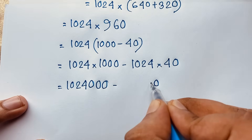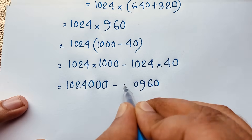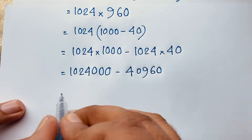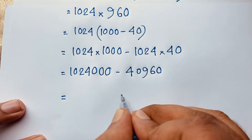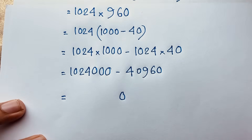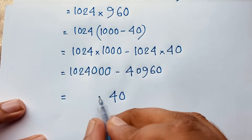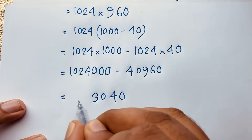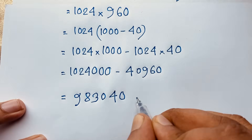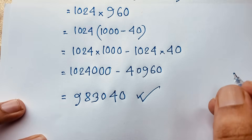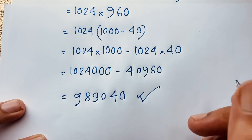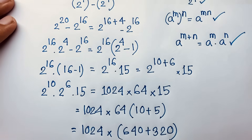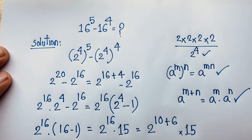Subtracting, 1,024,000 minus 40,960 gives us 983,040. This is our final answer to this interesting math problem. Thank you all — if you enjoy this video, please subscribe to my channel for other interesting videos. Goodbye, take care.